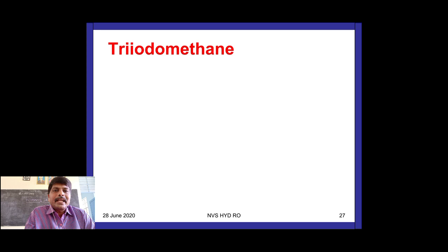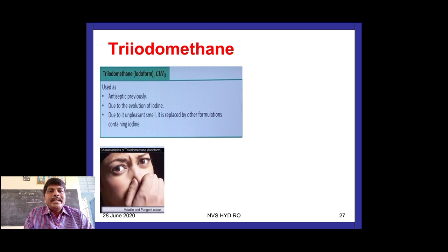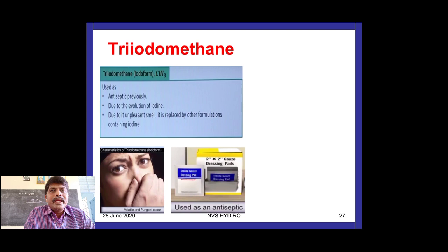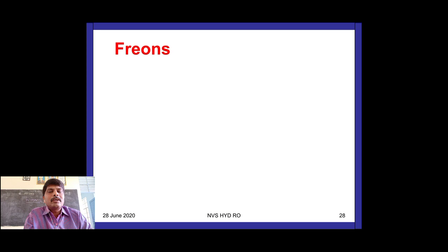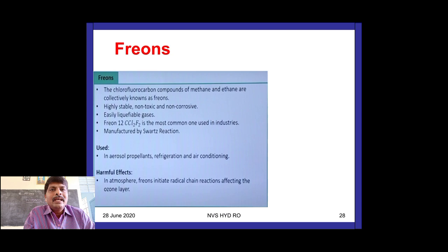Next polyhalogen compound: iodoform (triiodomethane, CHI3). It has antiseptic properties. Previously it was used as an antiseptic, but due to the unpleasant smell caused by the evolution of iodine it has been replaced. It is a yellow-colored crystalline solid and is a powerful antiseptic, also known as iodoform.